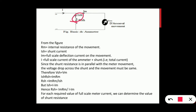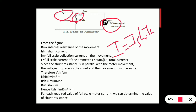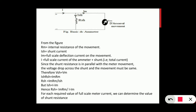This current is equal to Im × Rm. So (I - Im) × Rsh equals Im × Rm. Hence, Rsh equals Im × Rm divided by (I - Im). This is the formula for the shunt resistance.